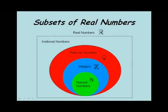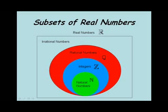We look at the subsets of the real numbers in a Venn diagram. The real numbers are all contained in this box. Inside the box we have the set of rational numbers — the red circle, the letter Q. Inside of that circle are all of the integers, the blue circle with the letter Z. And inside of the integers we have all of the natural numbers, represented by the letter N. Outside of all of these circles we have the irrational numbers.